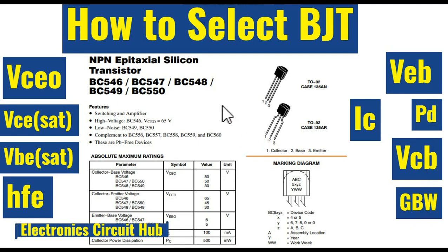Another parameter is the gain bandwidth product. Let us say you want to drive your transistor as an amplifier or you are driving your transistor with some frequency — this GBW, gain bandwidth product, is a very important parameter in that case. So these are the major parameters you need to look at before selecting your BJT or NPN transistor. First, identify your design requirement, then check all these parameters. One more thing to add: if your IC design spec is 20 milliampere for the LED, you should select a transistor with IC at least three to five times your design requirement — in this case, 100 milliampere.